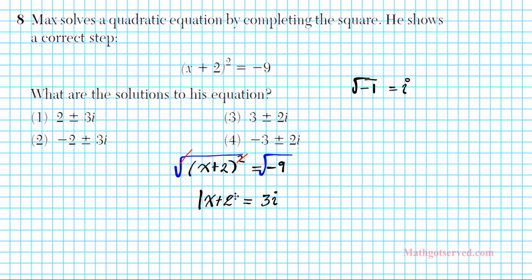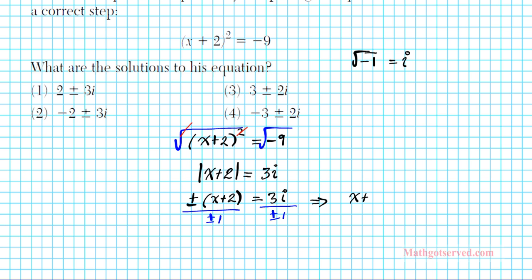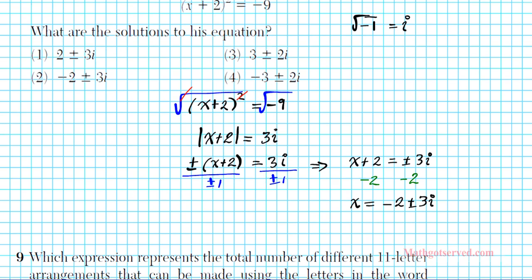Let's not forget the absolute value — because when you take the square root of a square, you have an absolute value. To get rid of that absolute value quantity, we can rewrite it as plus or minus x plus 2 equals 3i. Divide both sides by plus or minus 1, which gives x plus 2 equals plus or minus 3i. Then subtract 2 from both sides, and we have x equals negative 2 plus or minus 3i. That is the solution to our quadratic equation, so our answer is option number 2.